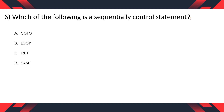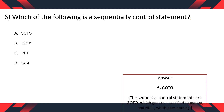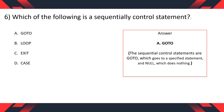Question 6: Which of the following is a Sequential Control Statement? Option A. GoTo, B. Loop, C. Exit, D. Case. The correct option is A, GoTo. The Sequential Control Statements are GoTo, which goes to a specified statement, and NULL, which does nothing.